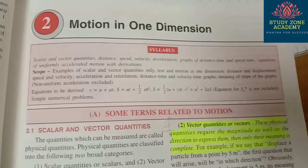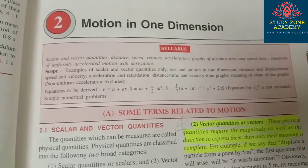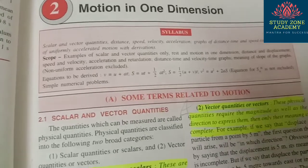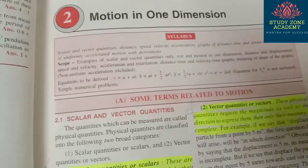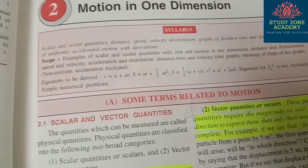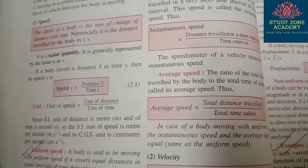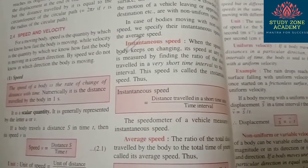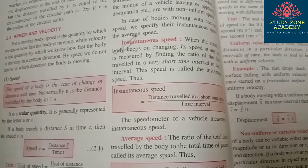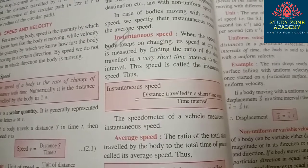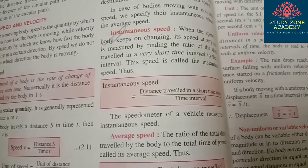The next part is motion in one dimension. From here you can expect questions on the difference between scalar and vector quantities, displacement and distance, uniform and non-uniform acceleration, uniform speed and instantaneous speed, and uniform versus variable velocity — along with examples, which are also very important.